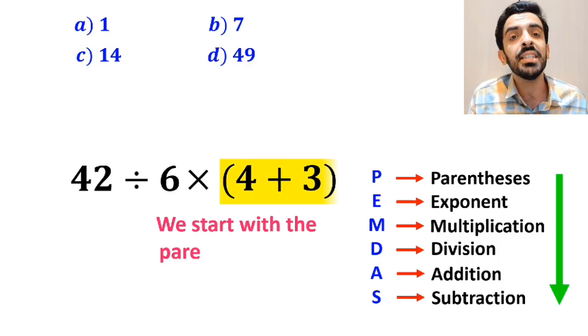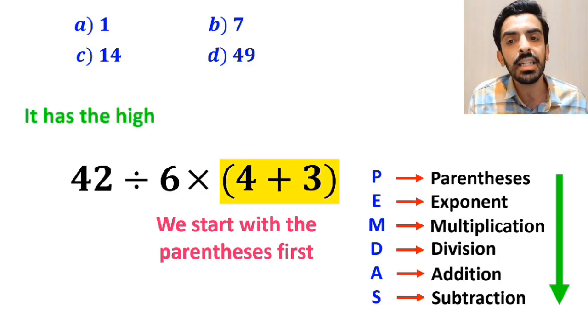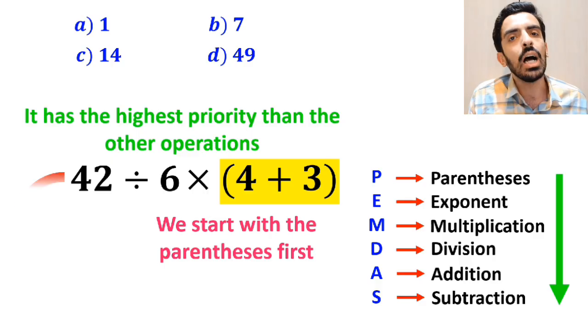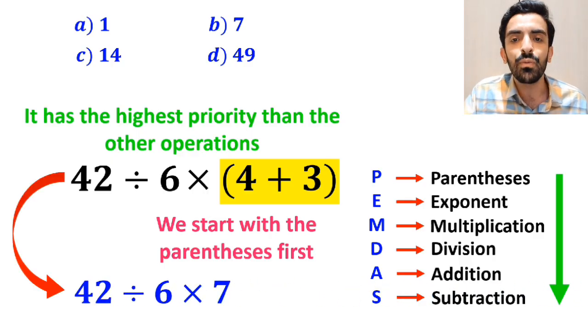So, we'll start with the parenthesis first, because it has the highest priority than the other operations. This expression simplifies to 42 divided by 6 then multiply by 7.